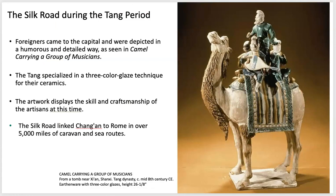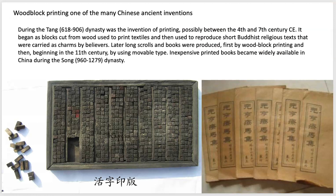During the Tang period the Silk Road brought many foreigners into main cities in China, influencing the type of artwork being made, techniques explored in ceramics and painting, and the stylistic representation of people. Woodblock printing was invented around this time, which really enabled Buddhist religious texts to be distributed to a wide variety of people — printing books that were very inexpensive so the belief system could spread amongst a large percentage of the population.